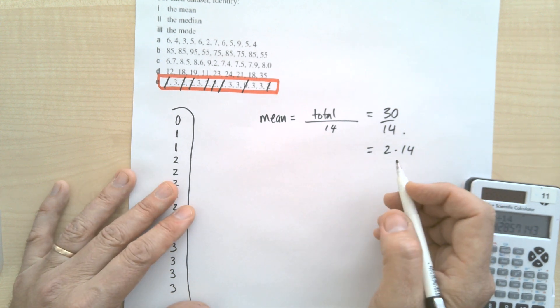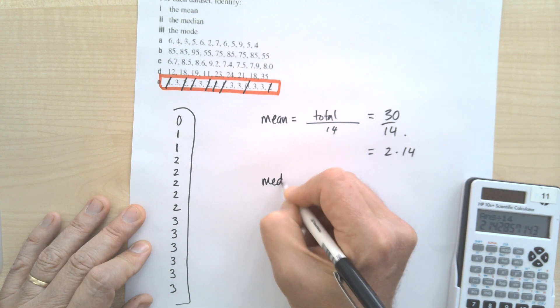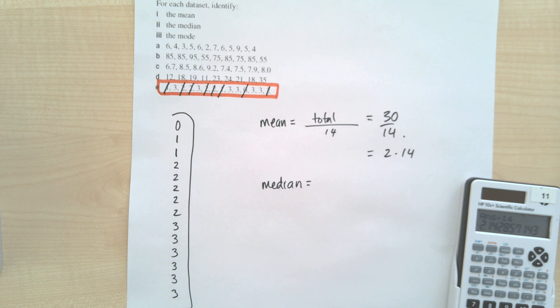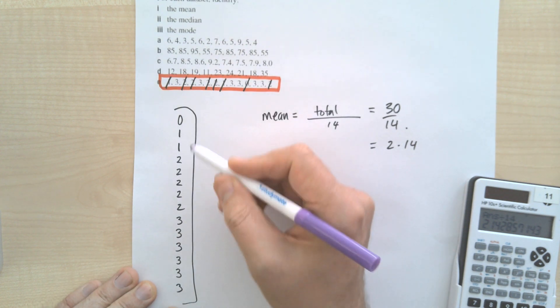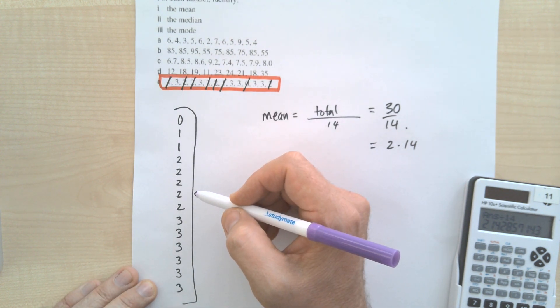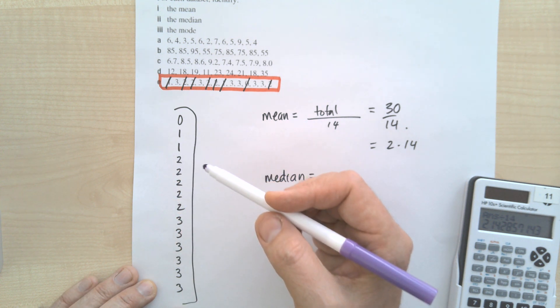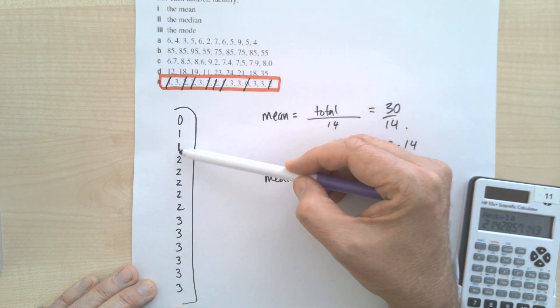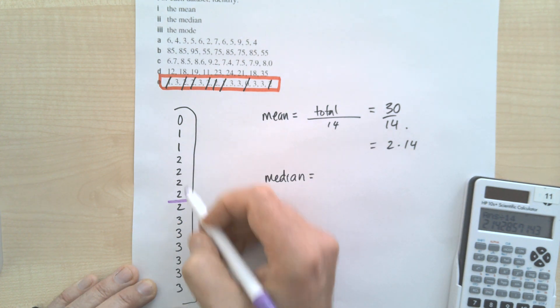Alright, so what about the median? Now here's the thing: the median is going to be the one that is dead set in the middle. So how do we do that? Well, we've got fourteen numbers. If you have an even amount of data, it's going to be halfway between the middle two. So half of fourteen is seven. One, two, three, four, five, six, seven.